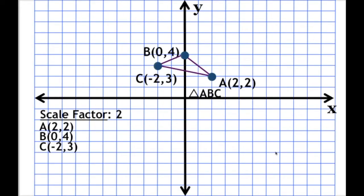Now let's see this in action. We have triangle ABC, where A is at (2, 2), B is at (0, 4), and C is at (-2, 3). Our scale factor is 2. Let's take a look at A first. A is going to become A prime, which is 2 times 2 and 2 times 2. Our new point is going to be A prime at (4, 4).